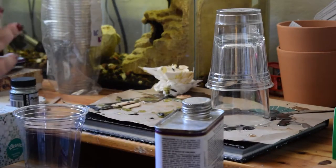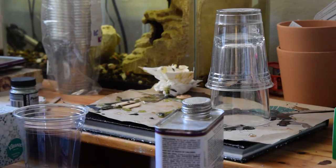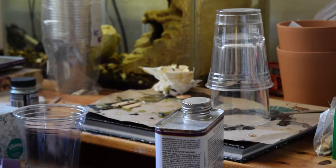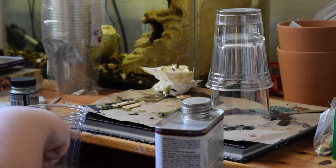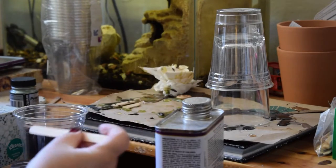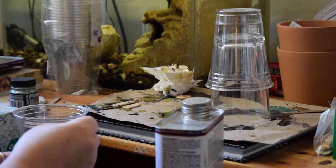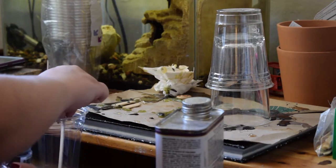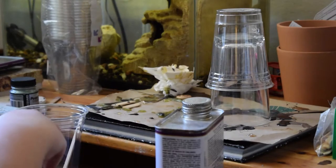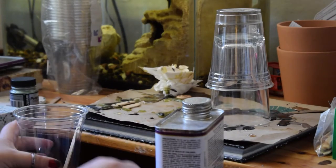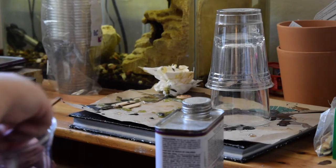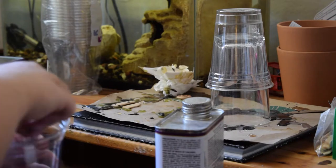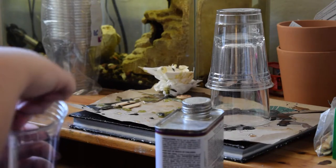We've got popsicle sticks for stirring. You don't want to use nice cutlery because you'll ruin it. Plastic or popsicle sticks are really cheap. We'll put a good dash of the powder in there. Now we'll stir this up really well. You want to make sure that you get everything off the sides.